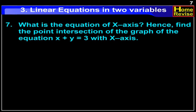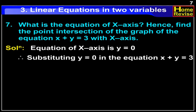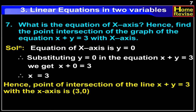What is the equation of the x-axis? Hence, find the point of intersection of the graph of the equation x plus y is equal to 3 with the x-axis. Solution: The equation of the x-axis is y is equal to 0. Substituting y equal to 0 in x plus y equal to 3, we get x plus 0 is equal to 3, therefore x is equal to 3. Hence, the point of intersection of the line x plus y equal to 3 with the x-axis is (3, 0).